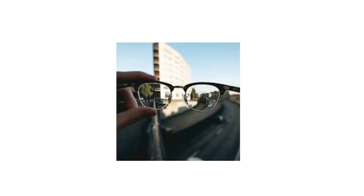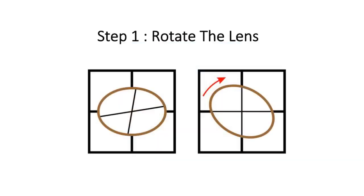Now let us learn step 1 of lens identification. Hold the lens in front of your eye and observe a distant object through it. Step 1 is to rotate the lens to determine whether it is spherical or cylindrical.